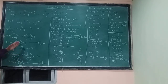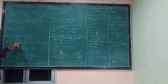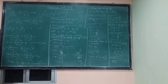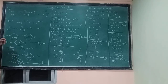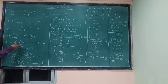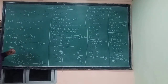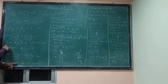Now we can see the coefficient of n in equation 1 is 2, and the coefficient of n in equation 2 is 5. We are going to equalize them. To do that, we multiply equation 1 by 5 and equation 2 by 2.